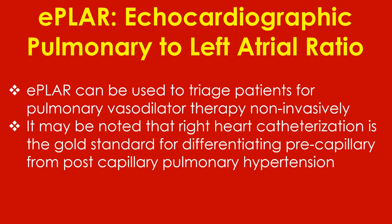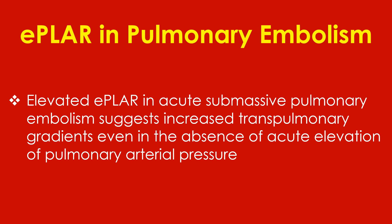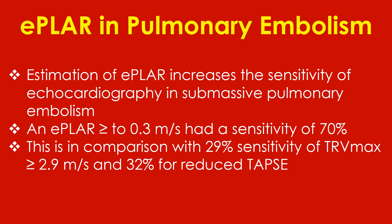E-PLAR can be used to triage patients for pulmonary vasodilator therapy non-invasively. Right heart catheterization remains the gold standard for differentiating pre-capillary from post-capillary pulmonary hypertension, with pulmonary capillary wedge pressure elevated in post-capillary pulmonary hypertension. In a study of 16,356 echocardiograms, the normal reference value of E-PLAR was 0.30 ± 0.09. Elevated E-PLAR in acute submassive pulmonary embolism suggests increased transpulmonary gradients even in the absence of acute elevation of pulmonary arterial pressure, and estimation of E-PLAR increases the sensitivity of echocardiography in submassive pulmonary embolism.